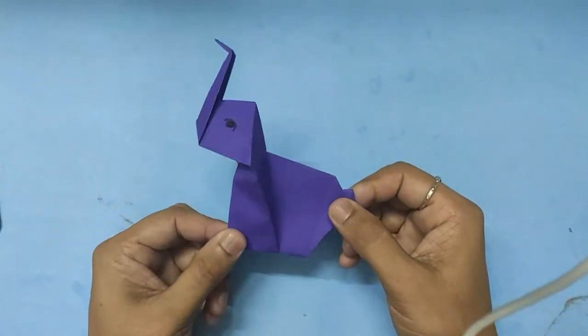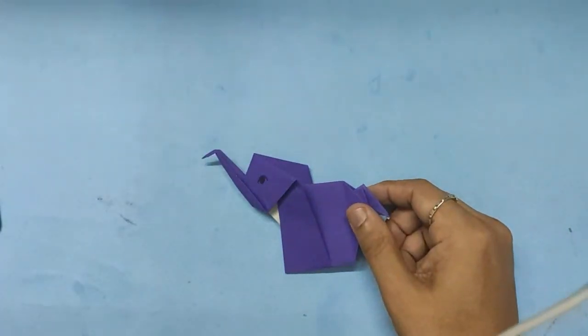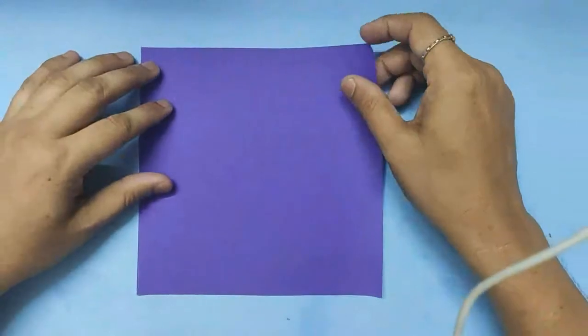Hello friends. Here we will make a trumpeting elephant. You can see how it trumpets. We will need a square paper.